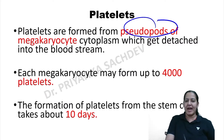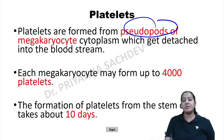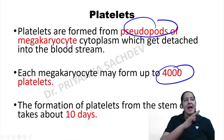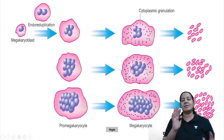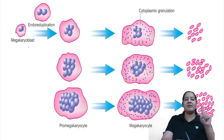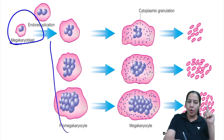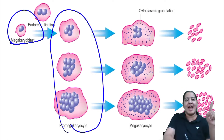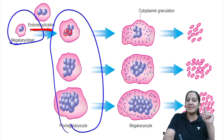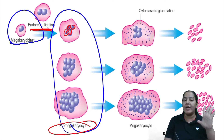Pseudopods are formed in the megakaryocyte and it gives rise to platelets. One megakaryocyte gives rise to 4,000 platelets, and the complete process takes 10 days. In complete thrombopoiesis, the first cell is megakaryoblast — the earliest precursor. It gives rise to promegakaryocyte by endo-reduplication, in which only the nucleus divides and the cell does not divide. All promegakaryocytes are polyploid cells — they are not diploid, they are polyploid.